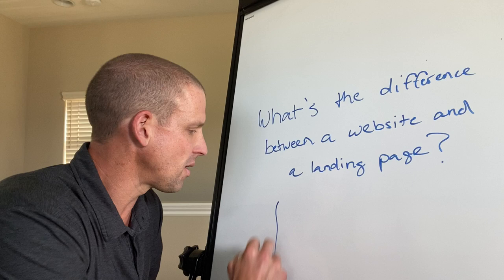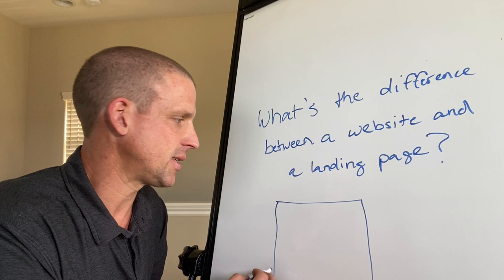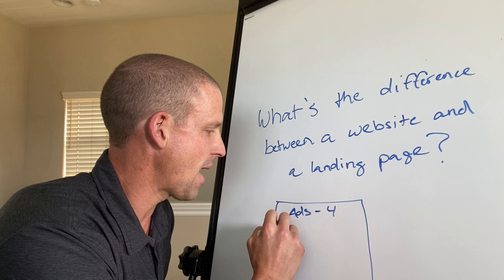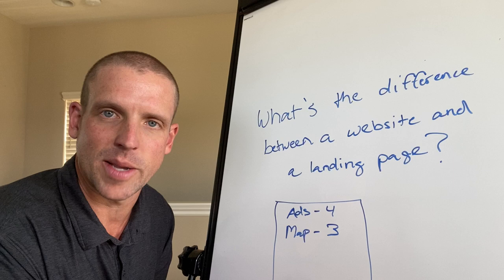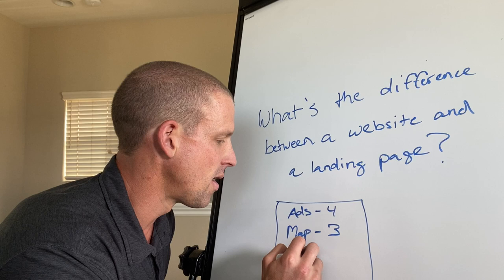Now, on a search result page, you're going to see ads at the top. There's usually four. Then there's the map. They call it the map pack. There's usually three listings in here. Sometimes there's the fourth, which is an ad. And then the organic listings are below that.